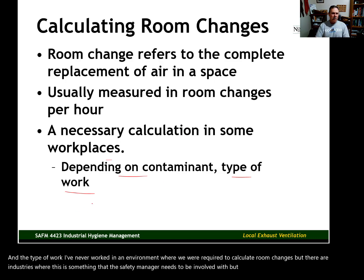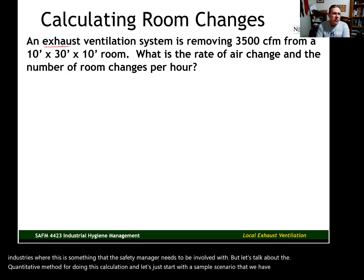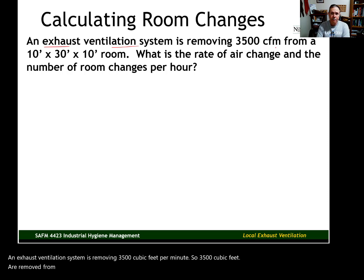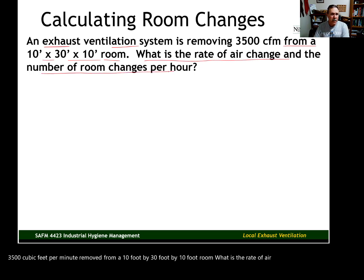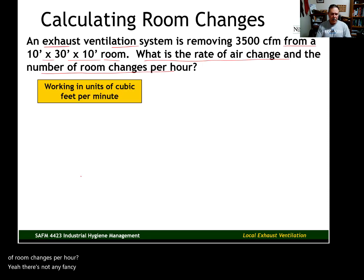Let's talk about the quantitative method for doing this calculation and start with a sample scenario. An exhaust ventilation system is removing 3500 cubic feet per minute — so 3500 cubic feet are removed from the space every minute — from a 10 foot by 30 foot by 10 foot room. What is the rate of air change and the number of room changes per hour? There's no fancy formula; it's just critical thinking and basic math skills.